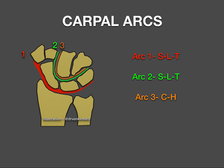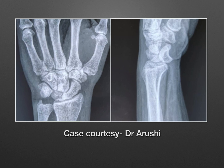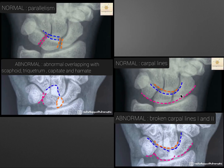Here is an example. If you draw the line of the arcs, you can see the scaphoid, lunate, and triquetrum — arc 1 looks fine. Looking at the second arc, you can see there is a disruption: the lunate has been displaced and is not continuous. On the lateral view, you can see the lunate is dislocated from its normal position. The carpal arc disruption is clearly seen on the AP radiograph, and we should suspect pathology at that level.